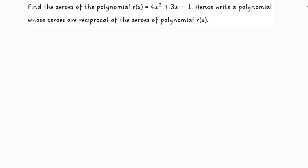Find the zeros of the polynomial f(x) = 4x² + 3x - 1. Hence, write a polynomial whose zeros are reciprocal of the zeros of the polynomial f(x).